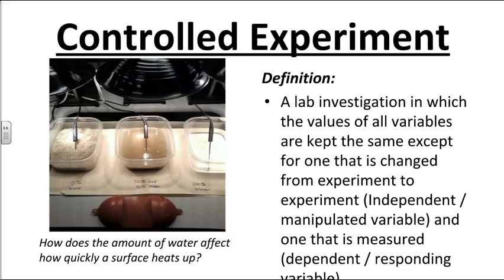The next is the controlled experiment — the gold standard of scientific research. We always prefer to do a controlled experiment when possible. In a controlled experiment, all variables are kept the same except for the one that's changed, called the independent or manipulated variable, and the one that's measured, called the dependent or responding variable. For example, we could measure how the amount of water affects how quickly a surface heats up, with water amount as the independent variable and rate of temperature rise as the responding variable.